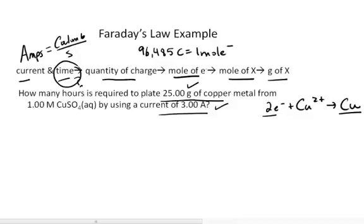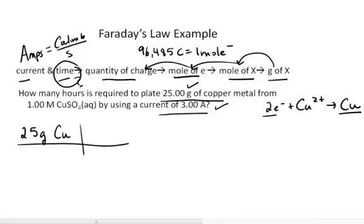Let's get ourselves from units of grams to units of moles to moles of electrons to charge, and then we'll use our current to determine given that quantity of charge how much time it would have taken to deliver that much charge. We start with 25 grams of copper. We need to get that grams of copper into moles of copper. We use the molar mass of copper, which is about 65.5 grams of copper per 1 mole of copper.